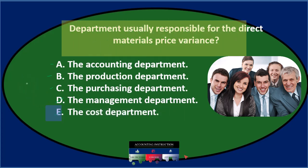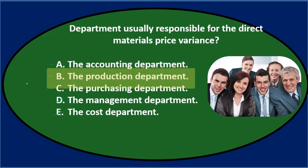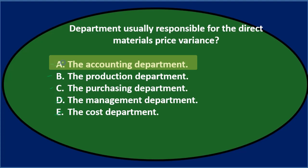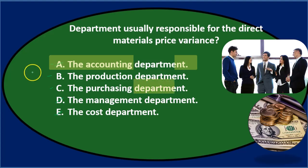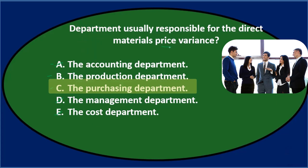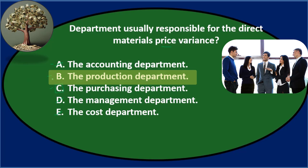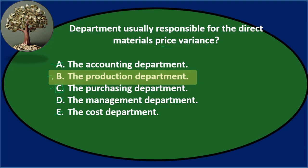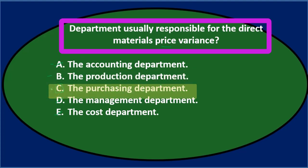So let's keep A, B, and C. Going through again — the accounting department seems fairly generic too, since it's not just accounting involved with direct materials. The people involved are typically production and purchasing. If we're talking about the price variance, we're breaking the difference between material costs between price and quantity. The purchasing department is in charge of price, while production is responsible for quantity — that's why we break the variance between those two departments. So the final answer is C, the purchasing department.